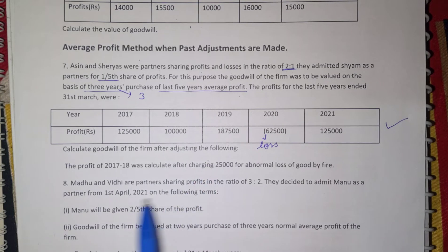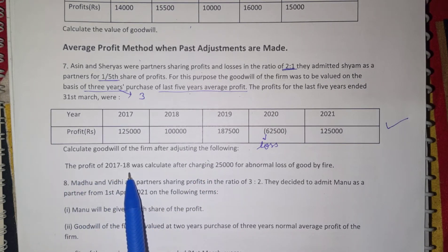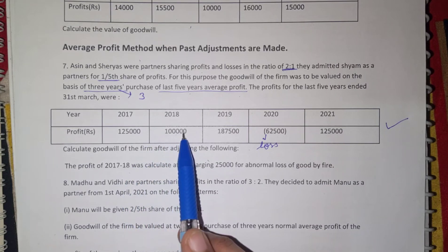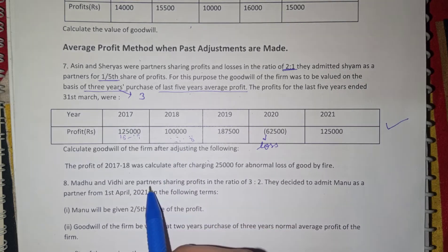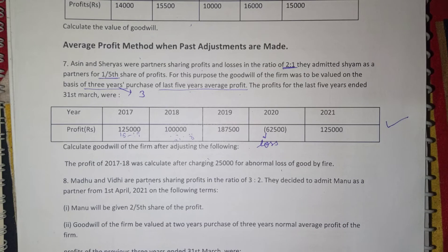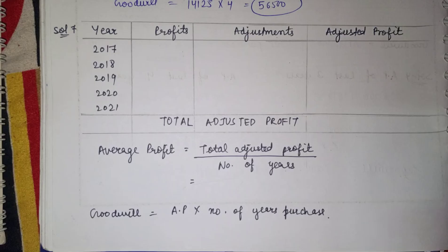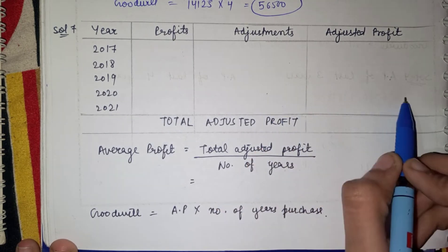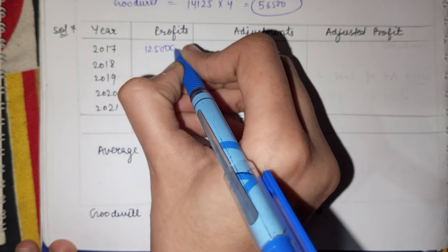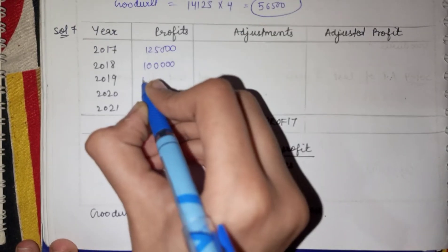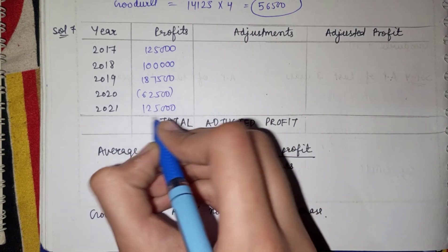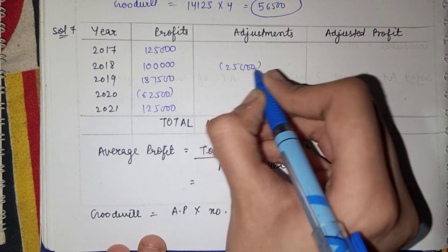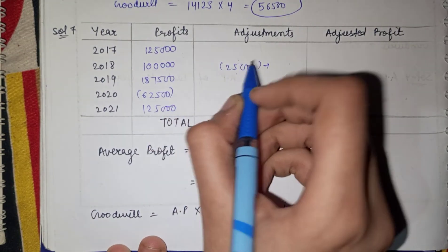Looking at the years: 2017-18 shows a profit. We need to calculate the adjusted profit. The rule is: when there is an abnormal loss, we add it back; if there is abnormal profit, we subtract it — it's the opposite situation. We first write the profit, then the adjustments, and then calculate the adjusted profit.